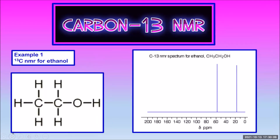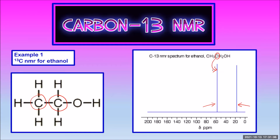Let's look at an example. In ethanol, one carbon is bonded to two hydrogens, an oxygen, and another carbon. The other carbon is bonded to three hydrogens and a carbon. Two different carbon environments, so we'd expect two peaks on the spectrum. Being bonded to a highly electronegative atom like oxygen makes the peak appear more downfield, so the carbon bonded to oxygen makes the downfield peak. The other carbon is bonded only to carbon and hydrogen — nothing too electronegative — so it makes a peak more upfield.